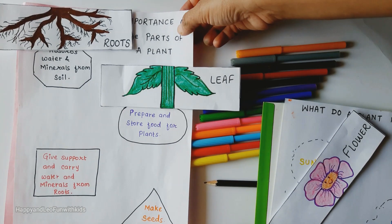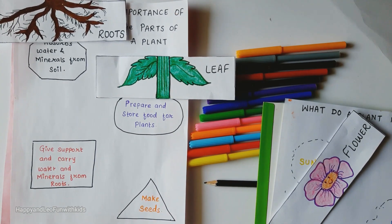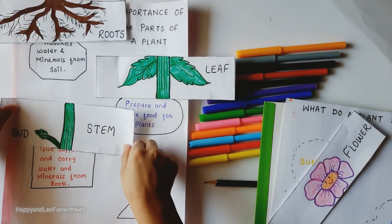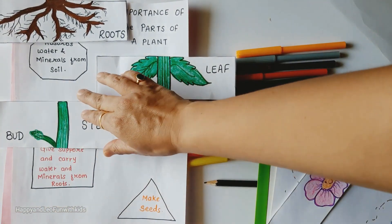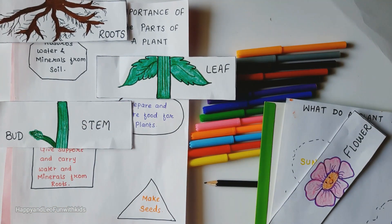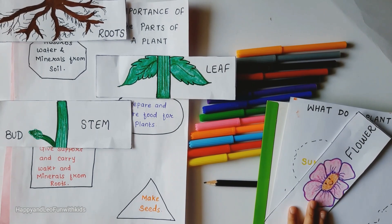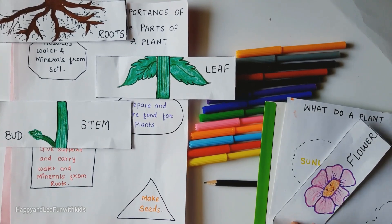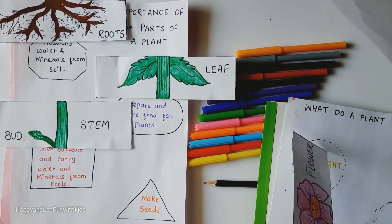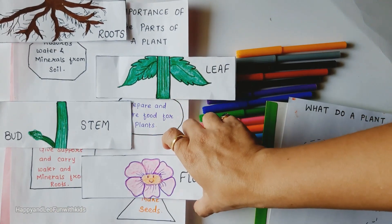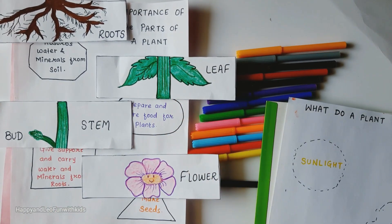Next: give support and carry water and minerals from roots to the entire plant — which part? Stem! Stem carries water and minerals from roots to the entire plant and gives support to the plant. Next: make seeds — flower! Flowers make fruit, and inside fruit we have seeds.